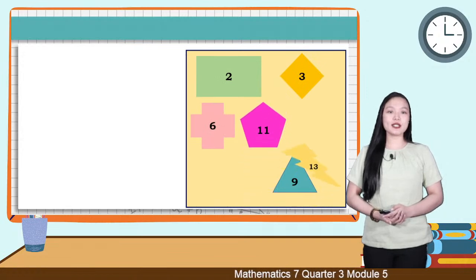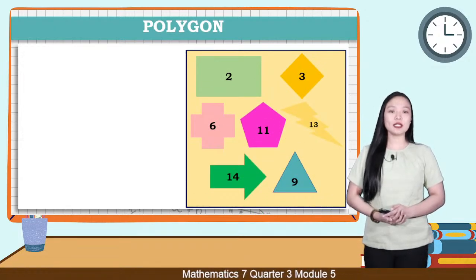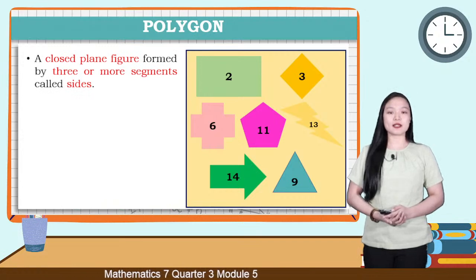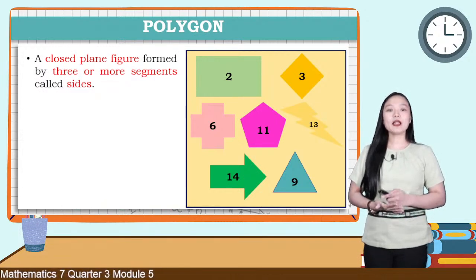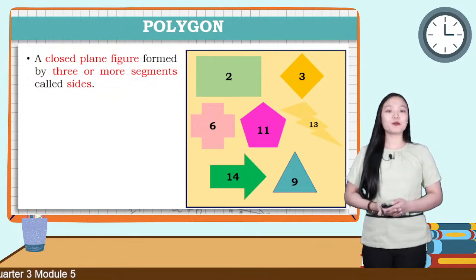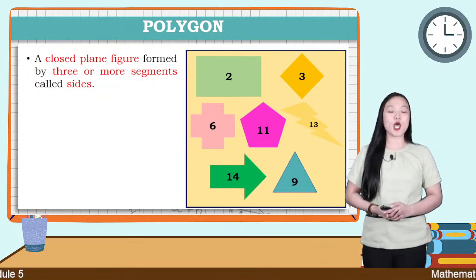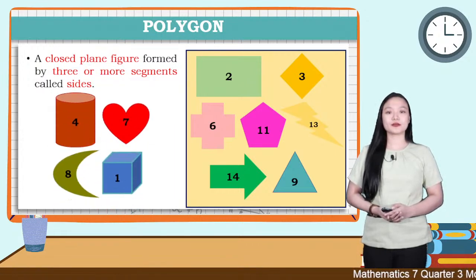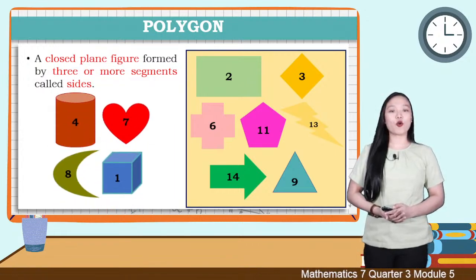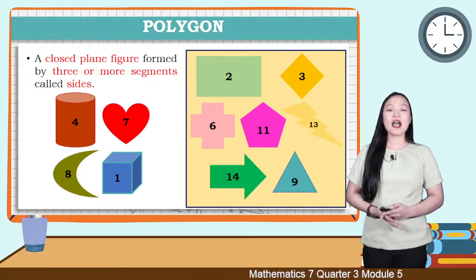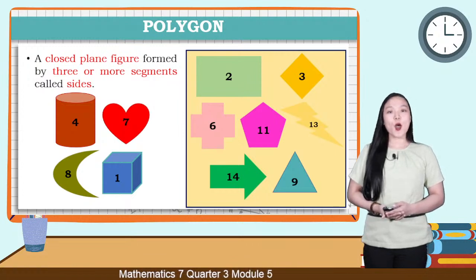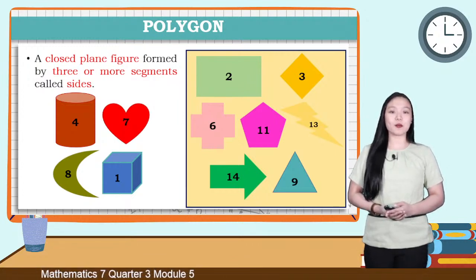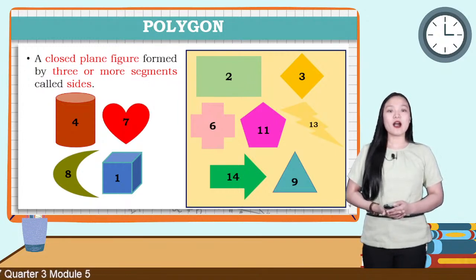Figures 2, 3, 6, 11, 13, 14, and 9 are polygons. Let us define polygon. A polygon is a closed plane figure formed by 3 or more segments called sides. Figures 4, 7, 8, and 1 are not examples of polygons. They're all closed figures but are not formed by 3 or more segments.